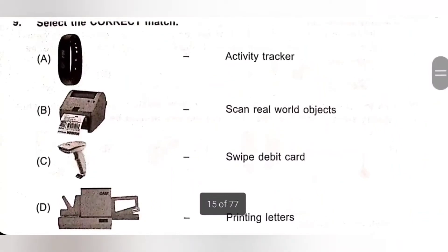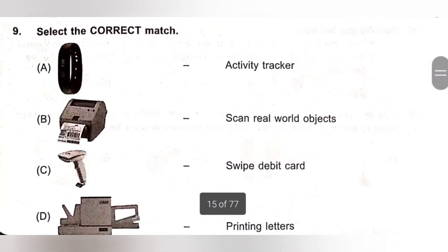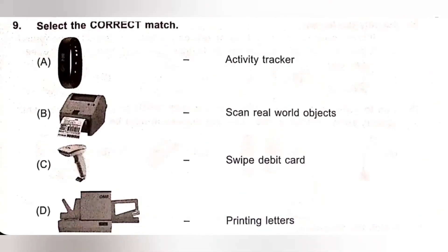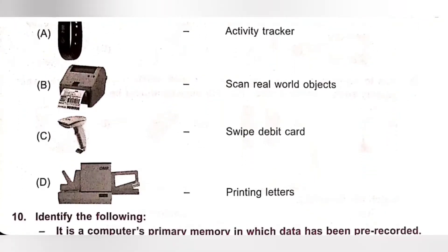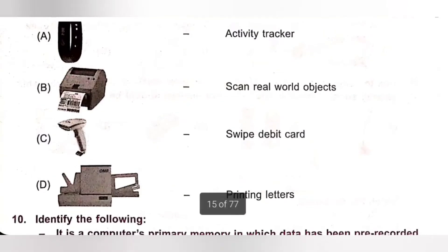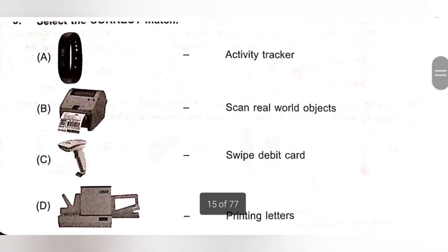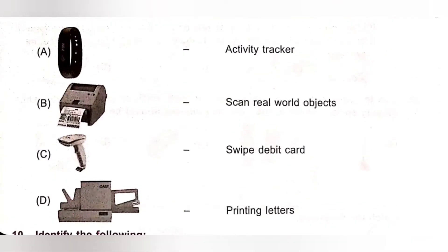Question 9: Select the correct match. A. Smartband — activity tracker. Correct match. B. Printer — scan real world object. Incorrect. C. Scanner — swipe debit card. Incorrect. D. Plotter — printing letters. Incorrect. Only option A, Smartband as activity tracker, is the correct answer.